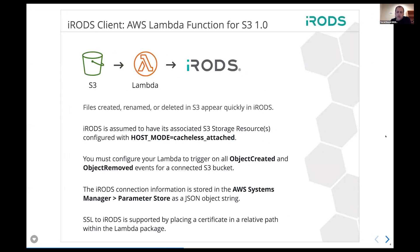Here we are — this is what we built and it works. Files that are created, renamed, or deleted all appear in iRODS relatively quickly. There's a little bit of delay because the entire system is asynchronous and it's all in Amazon's cloud — they could be traveling across zones or countries, but they do move pretty quick. iRODS is assumed to have any S3 storage resources configured with the cacheless attached mode introduced last year. Justin's talk earlier this year will also use this cacheless attached mode, so this shouldn't change anything when we move to the streaming interface of the S3 plugin.